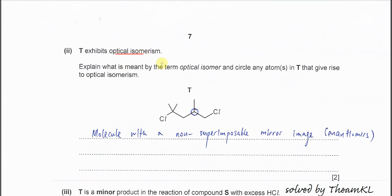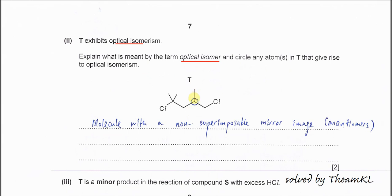T exhibits optical isomerism. Explain what is meant by optical isomer and circle the atom in T which gives optical isomerism. We know this carbon cannot because it has two methyl groups. This carbon has two hydrogens, cannot. This carbon, yes. It has one, two, three, and another hydrogen here. It has four different groups. That's why this carbon is a chiral carbon. It will give optical isomerism. Just explain what is optical isomer: molecule with non-superimposable mirror image. The pair of optical isomers we call enantiomers.